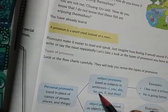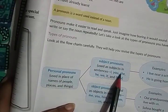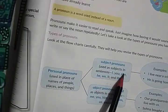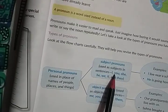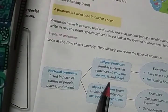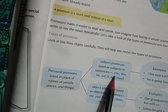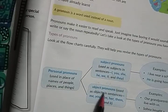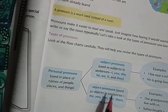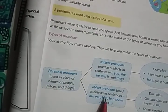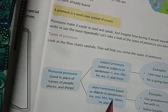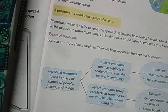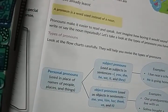Personal pronouns are divided into two parts: subject pronouns and object pronouns. Subject pronouns are used as the subject in sentences — I, you, she, he, we, it, and they. Object pronouns are used as the object in sentences — me, you, him, her, them, us, and it.